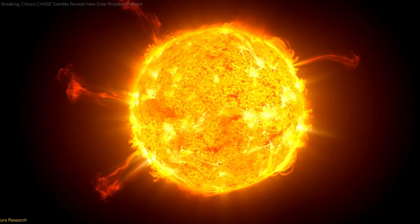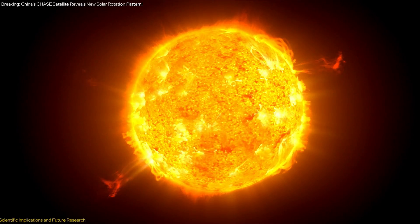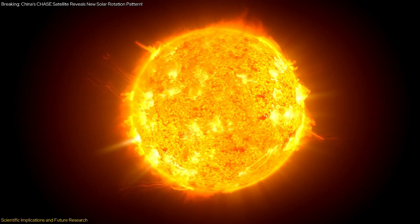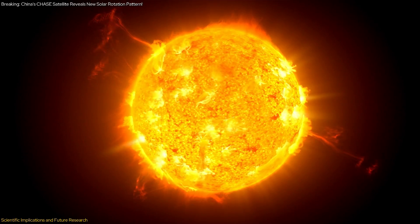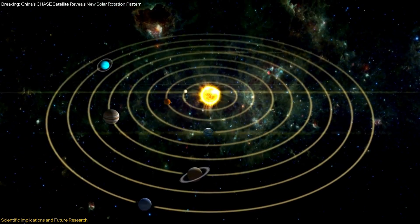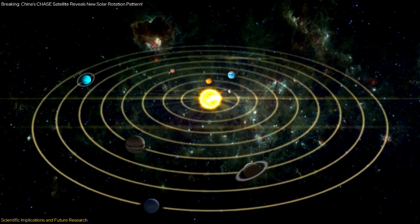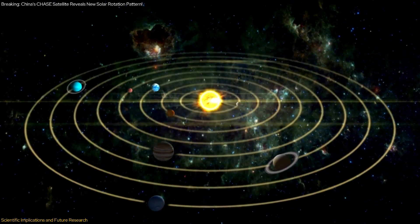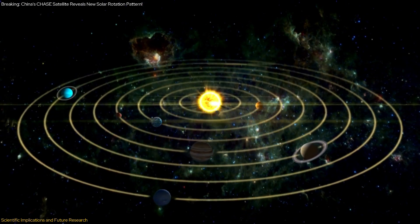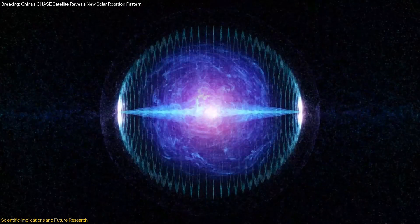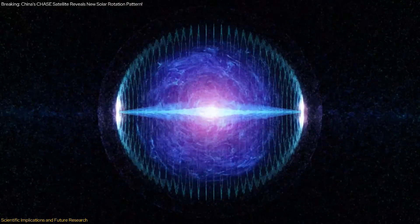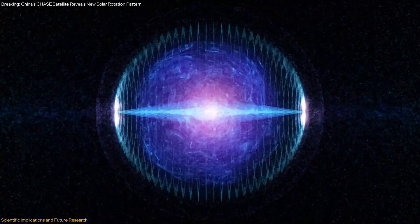The discovery of the new solar rotation pattern has profound scientific implications and opens up several exciting avenues for future research. One of the most intriguing aspects of this finding is the identification of an unknown force driving the increased rotational speed at higher altitudes in the sun's atmosphere. This force could be related to magnetic fields, plasma flows, or other phenomena that are not yet fully understood.